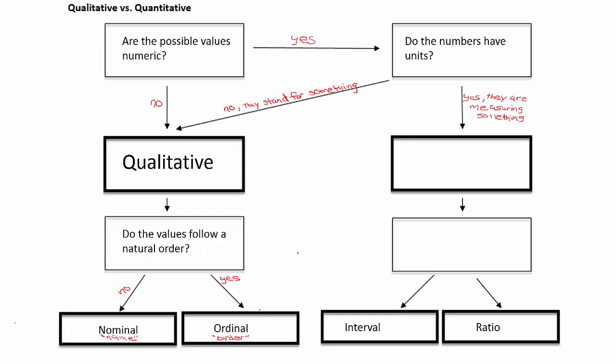With ordinal data, oftentimes there are still names or words because it is qualitative data, but there is a natural order. For example, looking at the size of a soft drink, the choices would be small, medium, and large — medium always comes between small and large. Things like grades: we know the highest grade is A, and it comes as a higher grade than B. This also applies to a Likert scale: if 1 is strongly disagree and 3 is neutral, the opinion is increasing in favorability as the numbers go up.